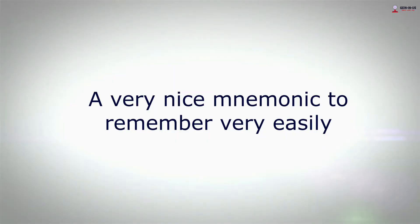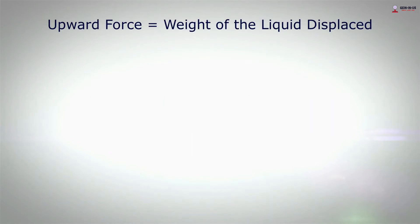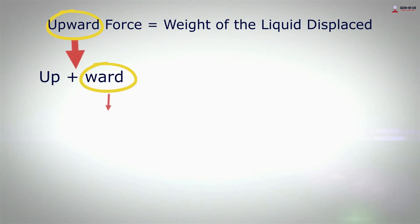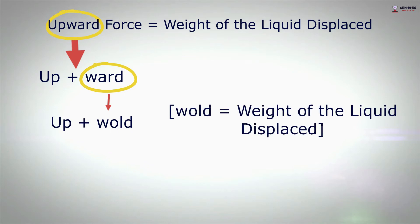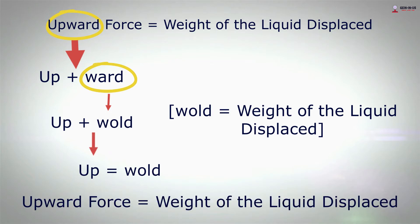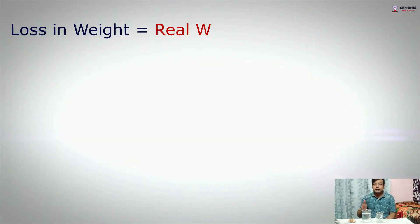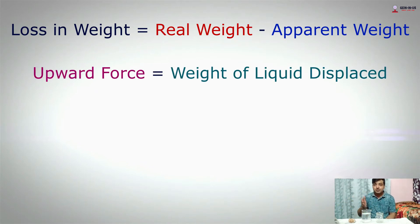Summary: upward force = weight of the liquid displaced (WLD). Loss in weight = real weight − apparent weight. Upward force = loss in weight = weight of liquid displaced. These three relationships summarize the entire experiment.